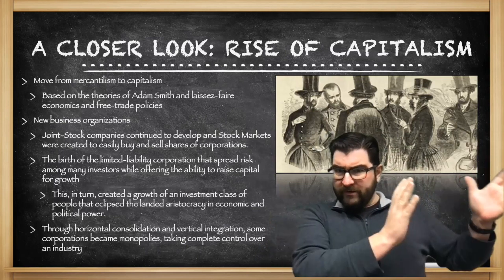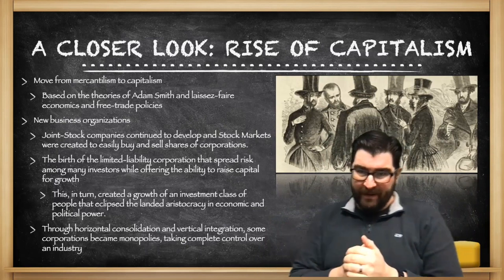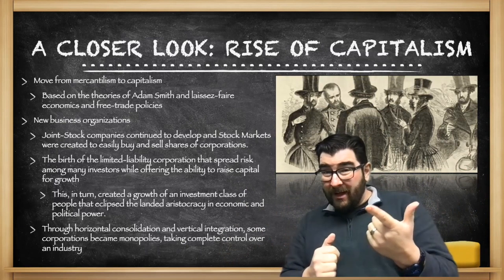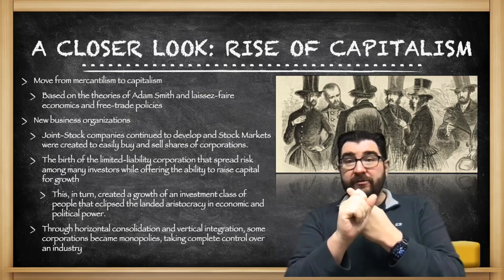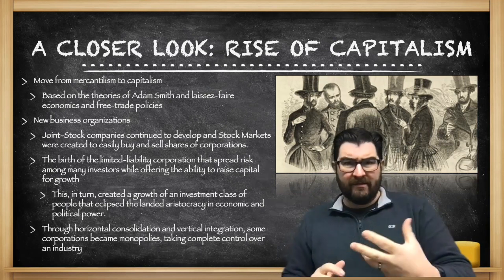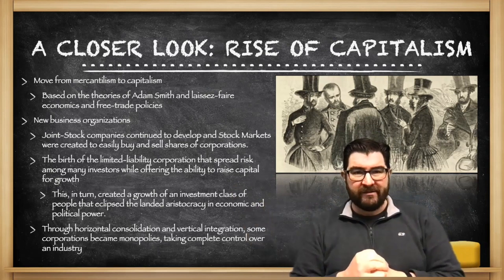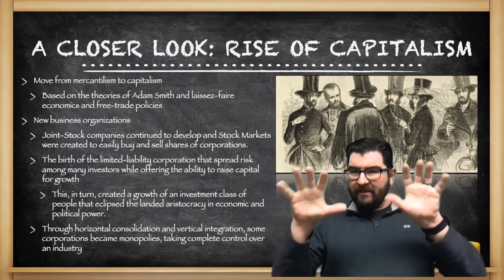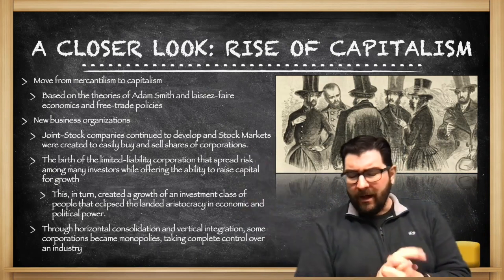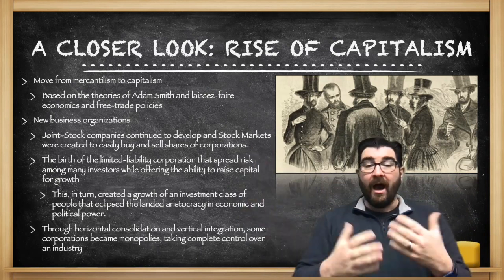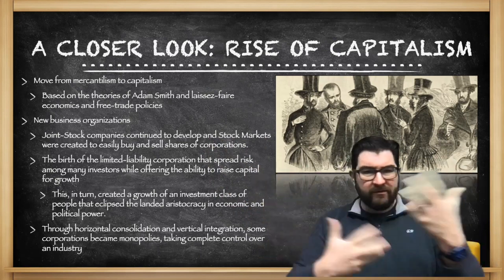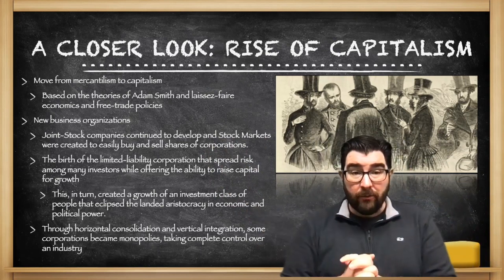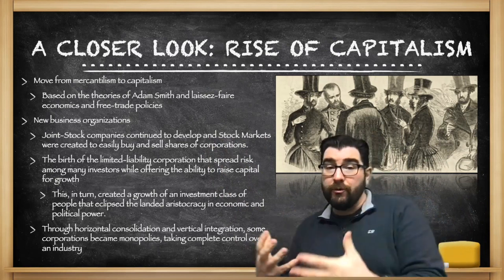The mercantilist economy of 1450 to 1750 held that the wealth of the world was very limited, so it encouraged colony building and governments supporting their own local industries through things like tariffs against foreign goods. The capitalist model, based on the theories of Adam Smith, called for laissez-faire economics — hands off, get the government out of economic dealings — and free trade policies. Letting nations trade with each other if that works best for them spurred economic growth in Western Europe and the development of new business organizations.